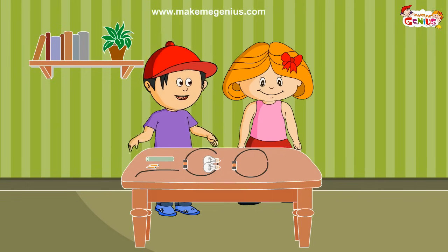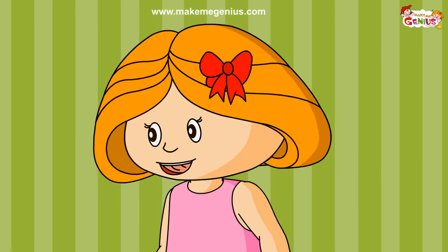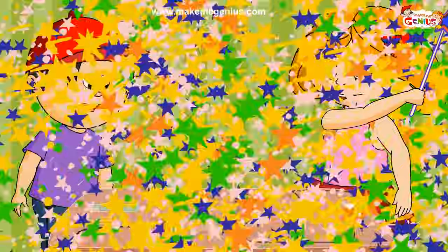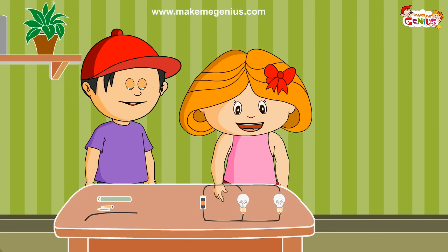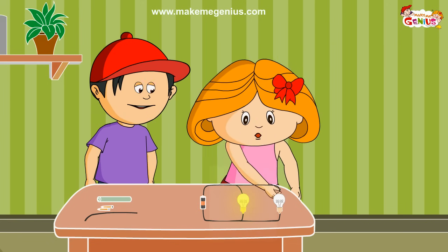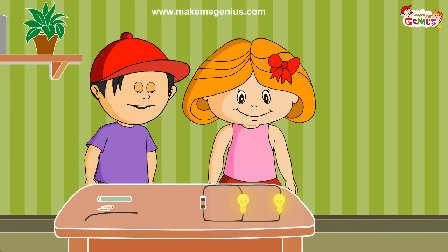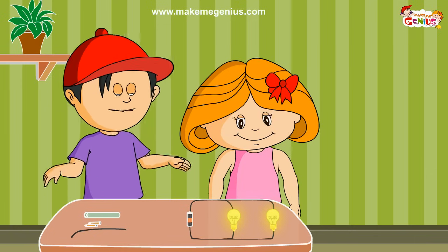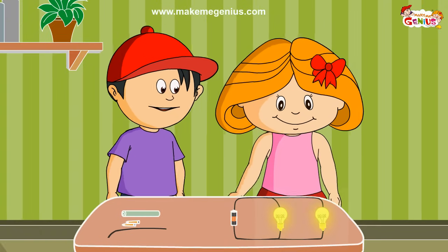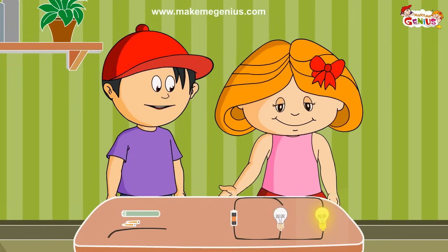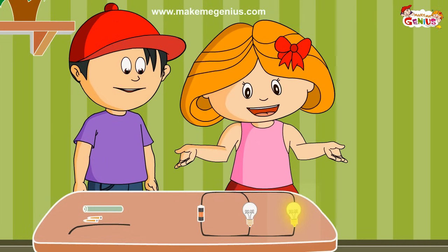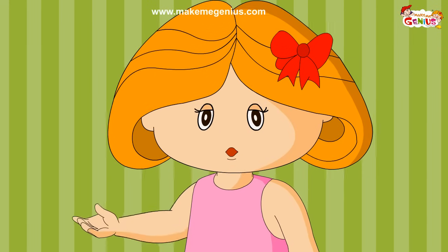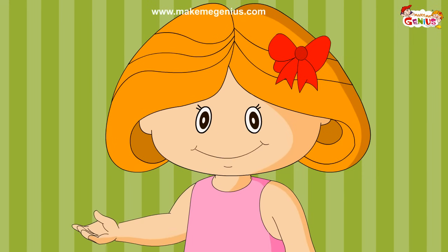Now I understand all about this simple circuit. Can you make a parallel circuit? Let's make a parallel circuit. As I told you before, it requires more wires than a simple circuit. Both bulbs are on. Can you remove one wire from the first? Look, only one bulb has gone off. The second bulb is still on.